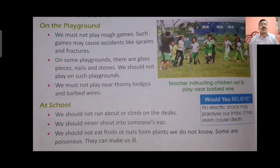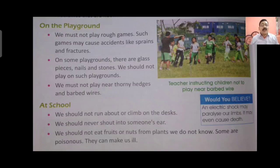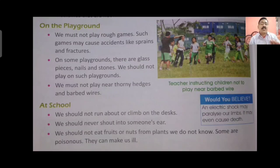We must not play near thorny hedges and barbed wires. Some places are covered with wires that are fully rusted due to rain and weather. We should not catch or play near them. A rusted wire can bring an accident, and if you get a cut from a rusted wire, you can get tetanus. Please avoid places where there are thorny bushes or barbed wires. Prefer a field which is free from all these things — a good, even, and green field where you can play with your friends or brothers and sisters.